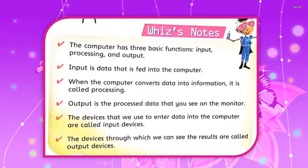Output is the processed data that you see on the monitor. Output is the result we get after processing — that is called the Output. The device that we use to enter data into the computer are called Input Devices. Through input devices we can enter and insert our data into the computer. The device through which we can see the result are called Output Devices — through output devices we receive the result from the computer.